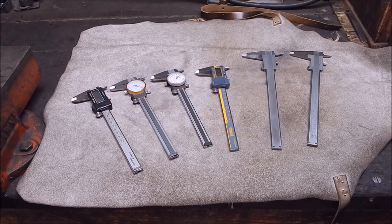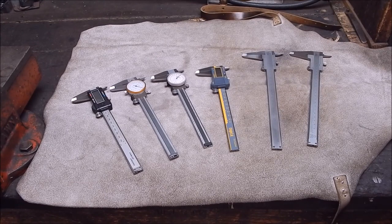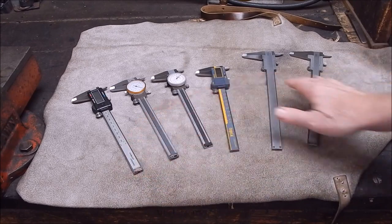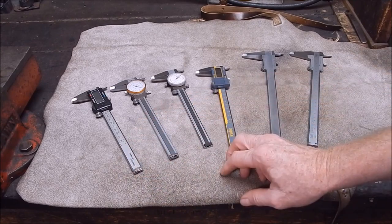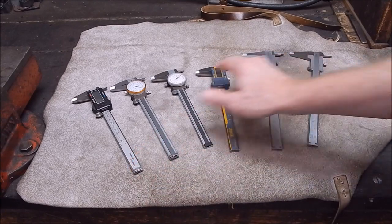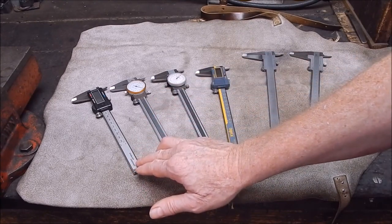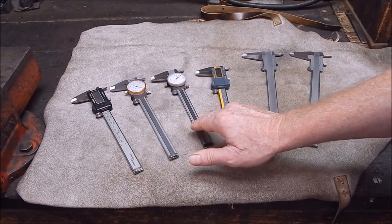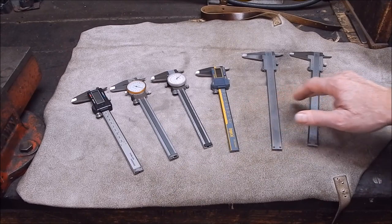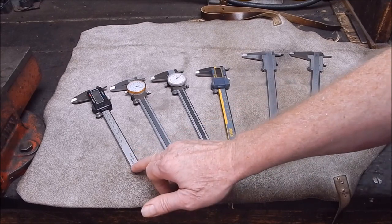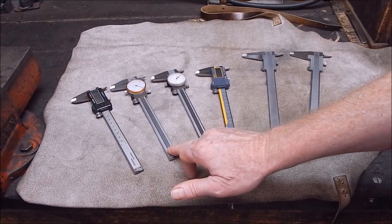G'day, it's Rob here again. If you've got a workshop where you do a bit of tinkering or model making, you're going to have something like this. These are all calipers - digital, dial, dial, digital, and then we've got a couple of verniers. That's a cheap Chinese one.